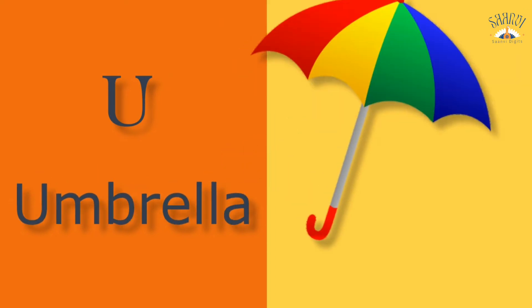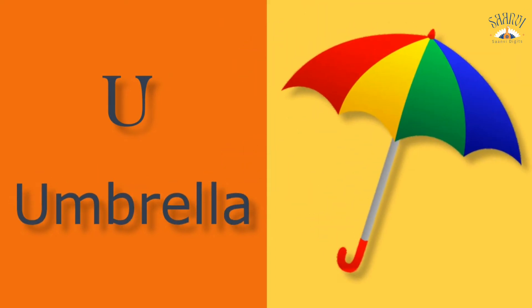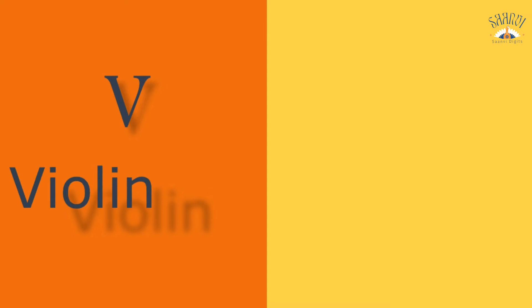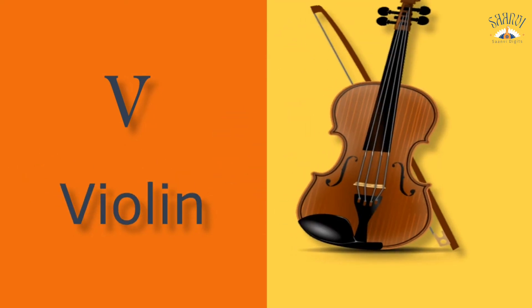Umbrella means chata. V for violin. Violin means violin.